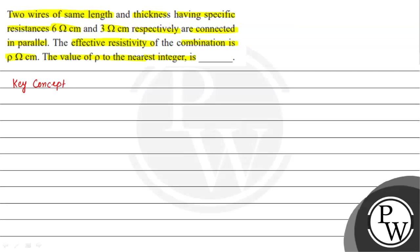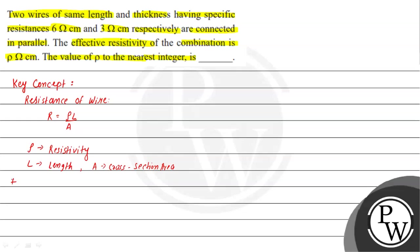The key concept we will use here to solve this question: resistance of a wire is given by R = ρL/A, where ρ (rho) is the resistivity, also called specific resistance, L is the length of the wire, and A is the cross-sectional area.